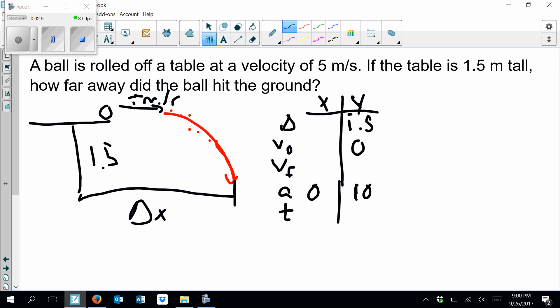And it says it's rolled off the table at a velocity of 5 meters per second. So I put that in for the initial velocity in the x direction. That is also the final velocity in the x direction, because we're not accelerating at all anywhere in that problem. It will have the exact same velocity. So 5 throughout.